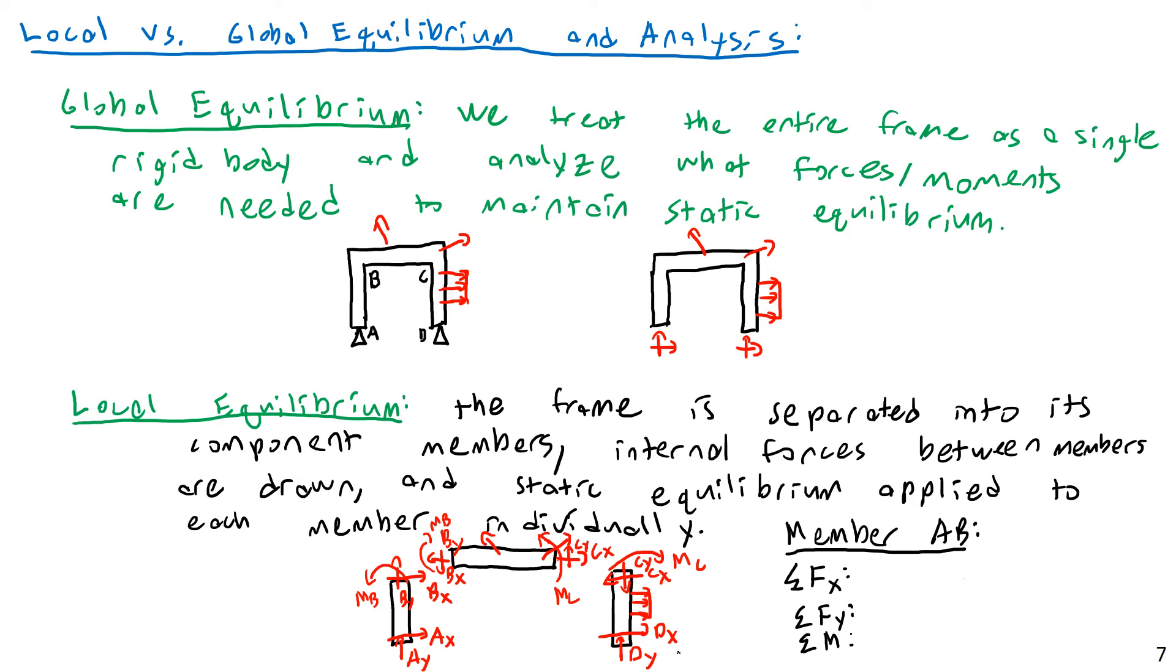That, fundamentally, is the difference between global equilibrium and local equilibrium. Or I could also title this the difference between global analysis and local analysis. There are basically two forms of equilibrium analysis. So you could call it global equilibrium or global analysis, and local equilibrium or local analysis. The key thing I want you to keep in mind is that I want you to appreciate the difference between global and local. Global is treating the entire frame as a single rigid body, and local is breaking it up into pieces and analyzing equilibrium on each piece as its own individual object.